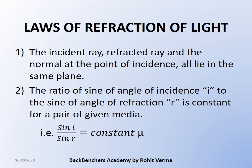Now let's talk about the laws of refraction of light. There are two major laws. The first law says that the incident ray, refracted ray, and the normal at the point of incidence all lie in the same plane. The second law says that the ratio of sine i upon sine r — that is, the sine of the angle of incidence to the sine of the angle of refraction — is constant for a given pair of media. This constant is called mu, which we'll discuss in detail.